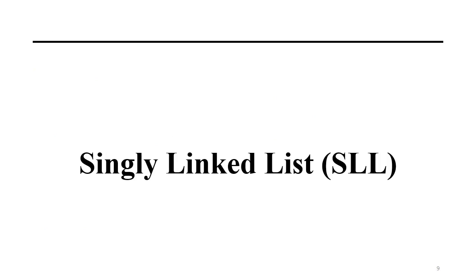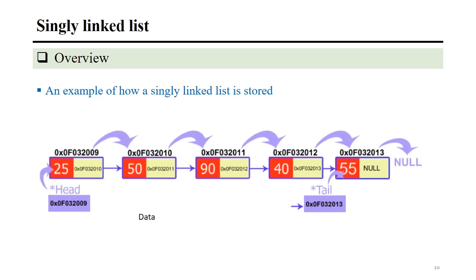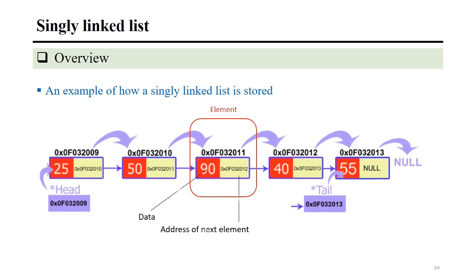Next we will look at single linked list in more detail. This is an example showing how data is stored in a single linked list. You have the first element and the last element, and each element is linked to one another using an address, which is a pointer. For example, in the first element, the pointer stores the address of the next element, which is address 0x032010. Each element consists of data and an address to the next element, and the element itself also has an address, which is used by the previous element to link to it.